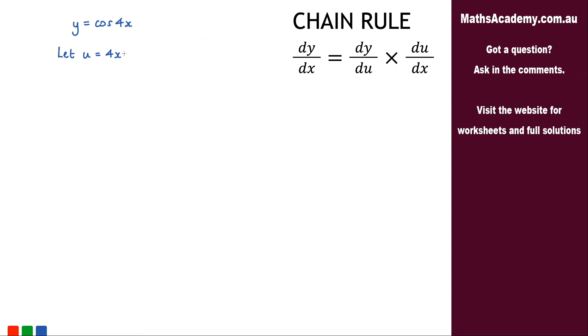Now the first thing we need to do here is to differentiate this. So du by dx is going to be equal to 4.